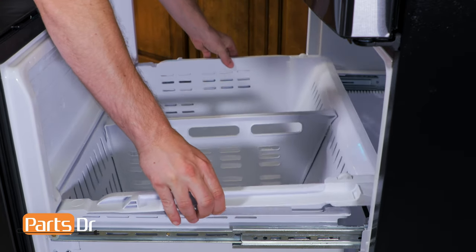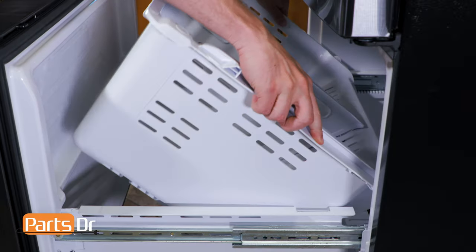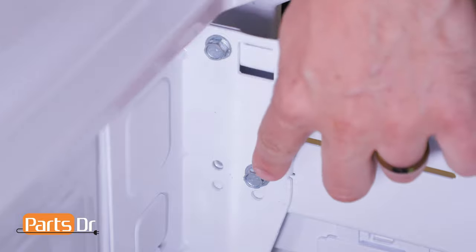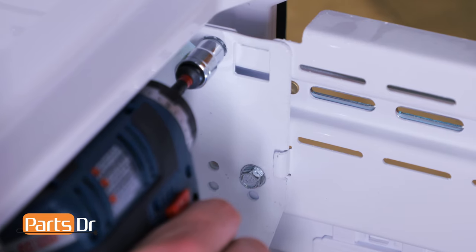Next, remove the freezer box tray by tilting the rear and pushing back to remove it from the front slot, then tilt forward and lift up to remove. Next, remove the four 10 millimeter bolts. There are two on each side.